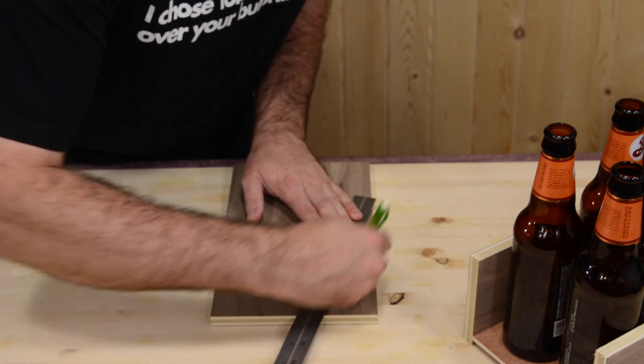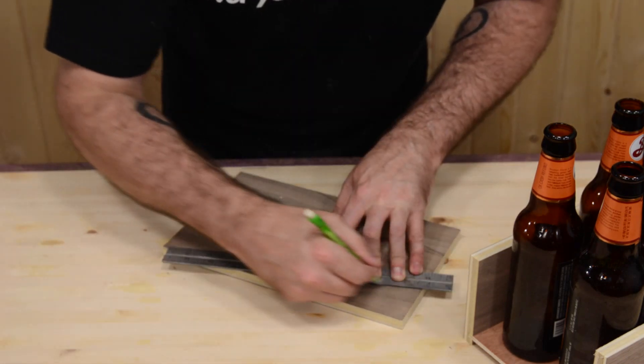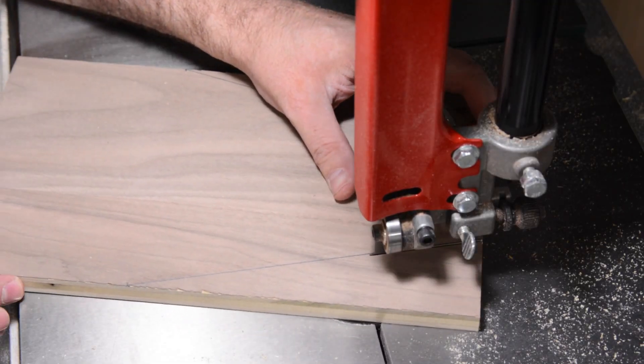For the two end pieces I mark and draw the angles. Next I cut them out on the bandsaw.